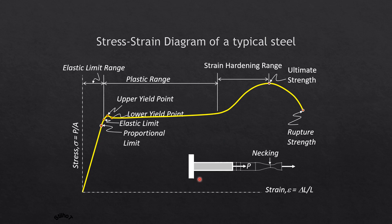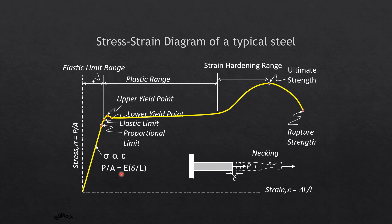Within the proportional limit, the slope of the straight-line portion is called Young's modulus of elasticity. In this straight-line portion, stress is proportional to strain — this is Hooke's Law. So P over A equals E times deformation over length, and therefore deformation equals PL over AE. This is the deformation formula for an axially loaded member, valid within Hooke's Law or within the straight-line portion only.